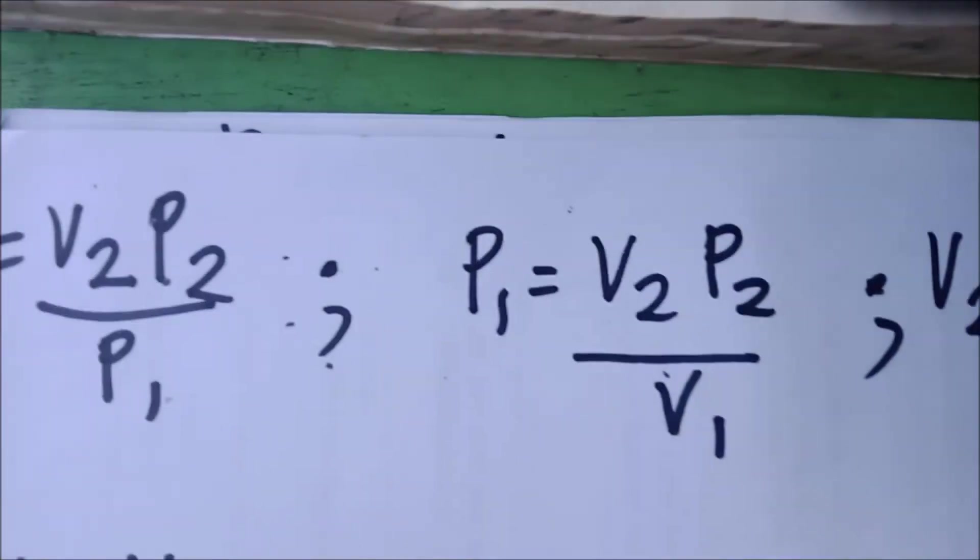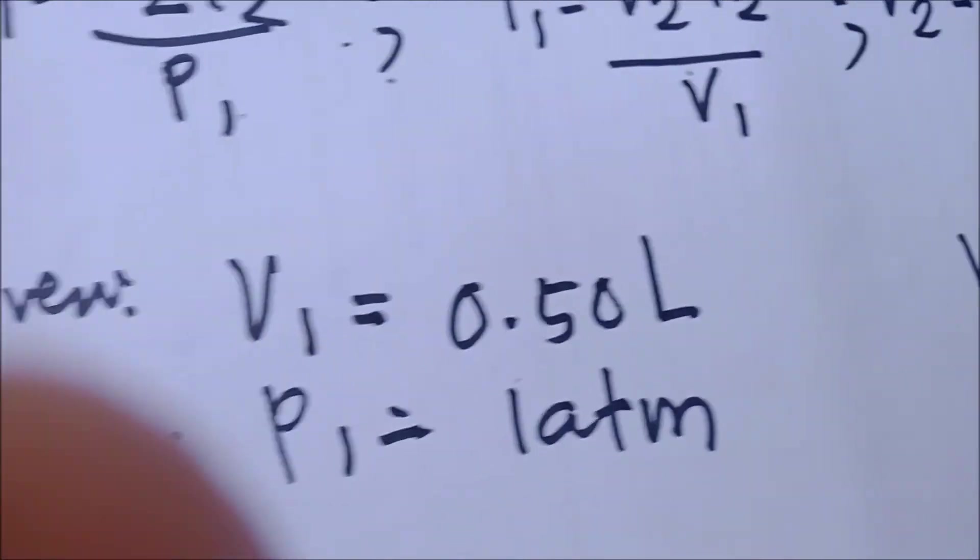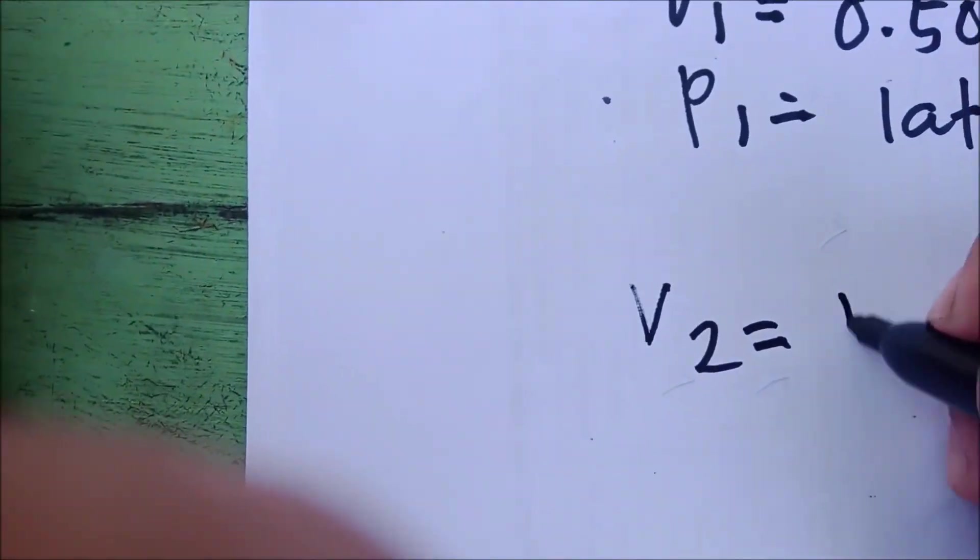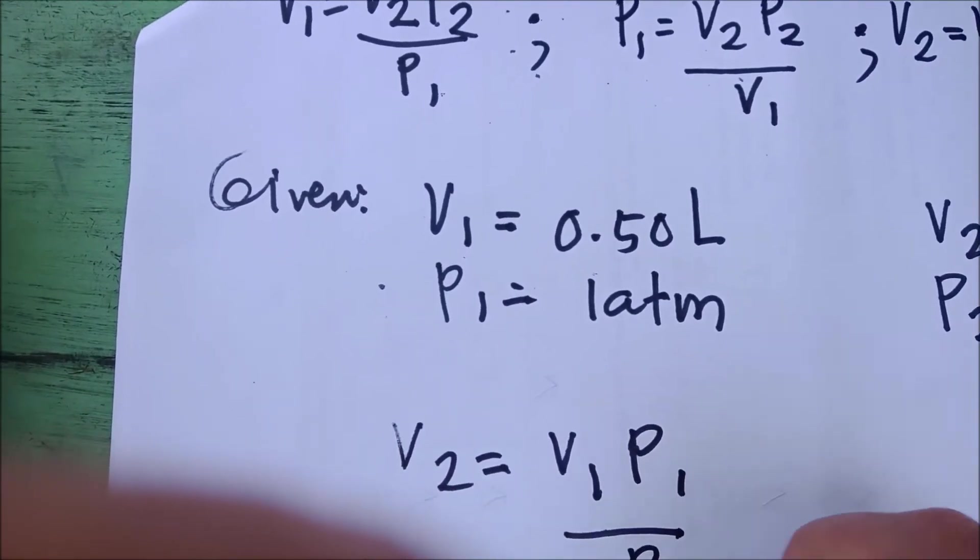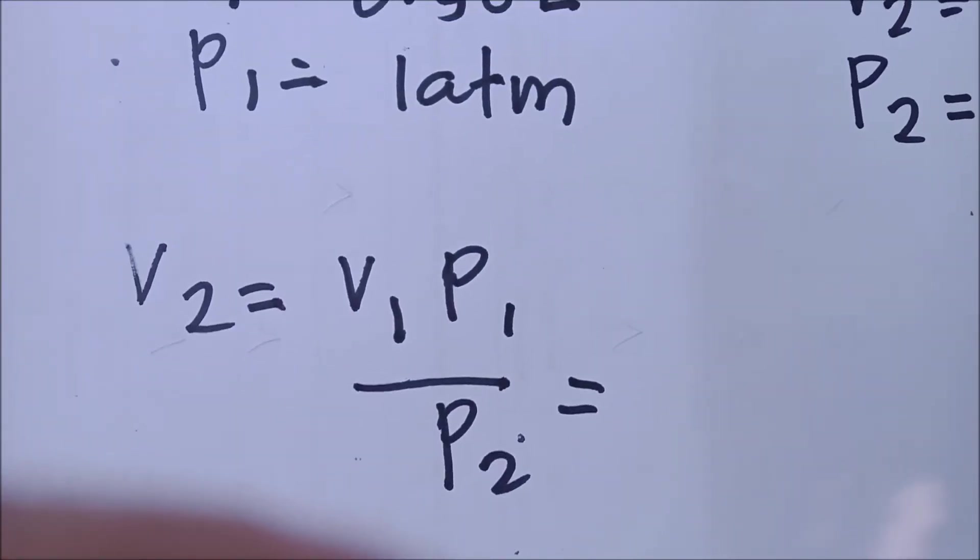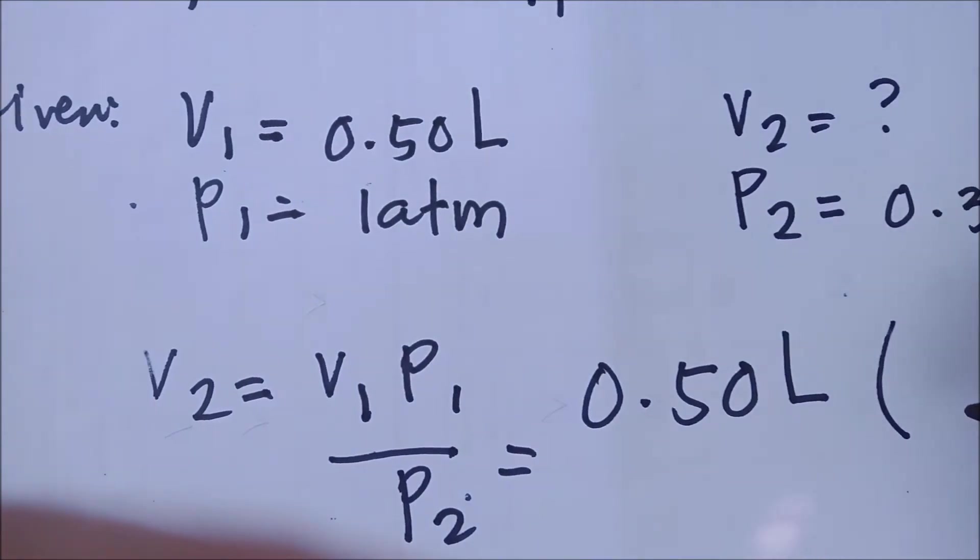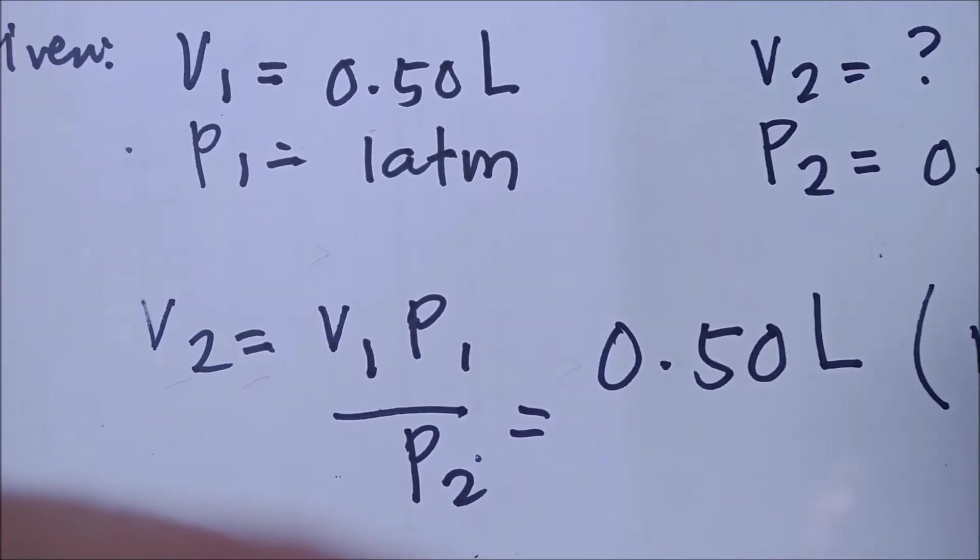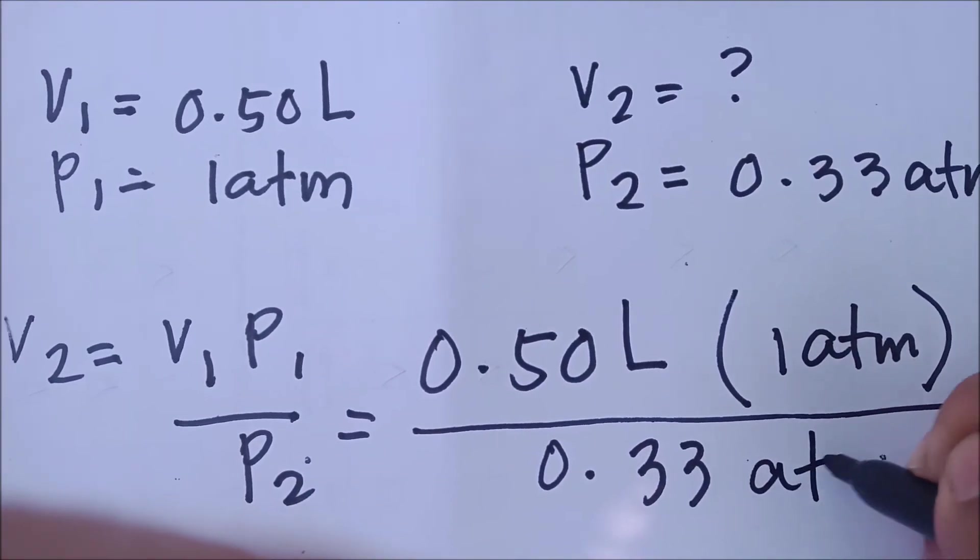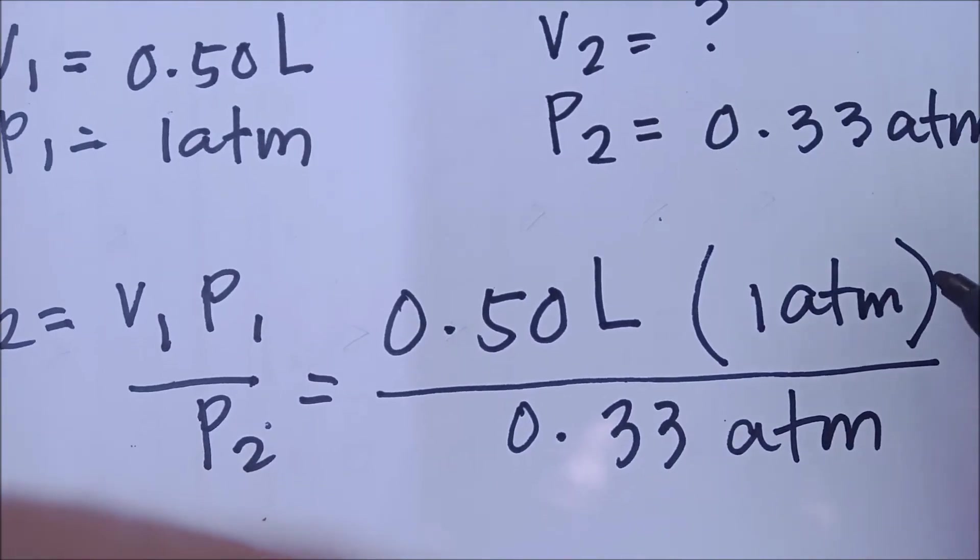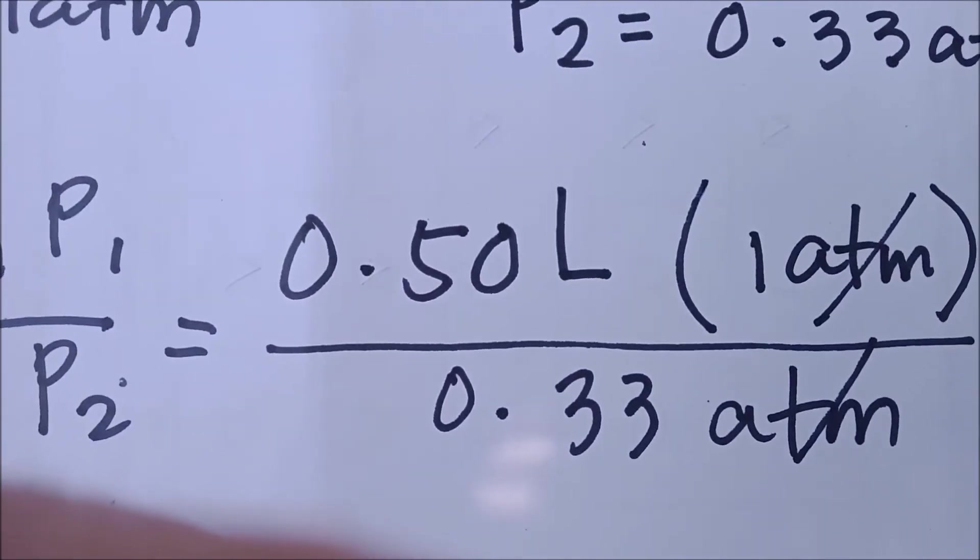What formula, or which among these four formulas will be used? We're going to use this one. Let's solve V2 is equal to V1, P1 over P2. Just substitute the values. V2 is 0.50 liters times P1, 1 atmosphere, divided by P2, 0.33 atmosphere. What happens to this unit? They will be canceled out. They cancel out each other. The remaining unit is in liter.